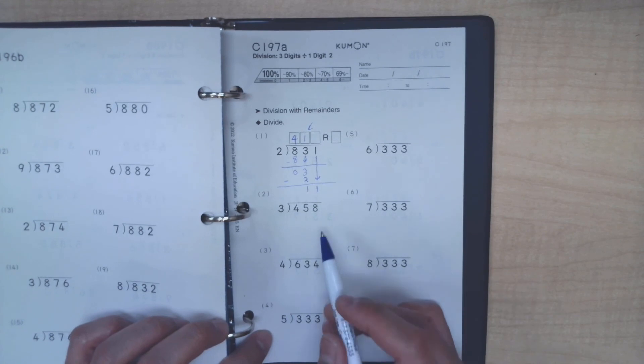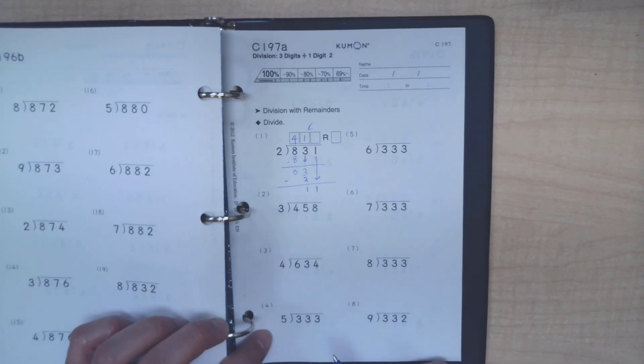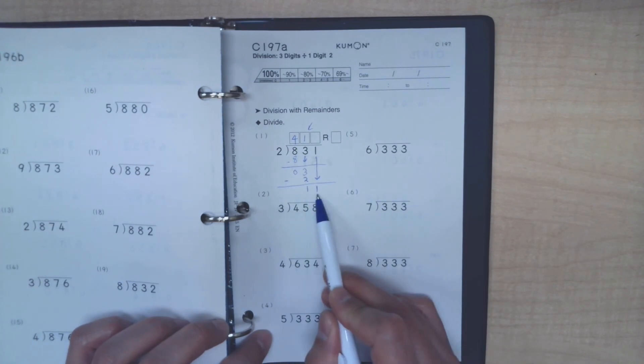Again, the next step is another division, where it's 11 divided by 2. We know that 2 times 5 is 10, which is really close to 11 without going over that number.